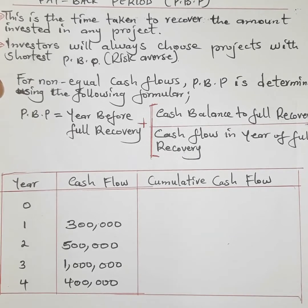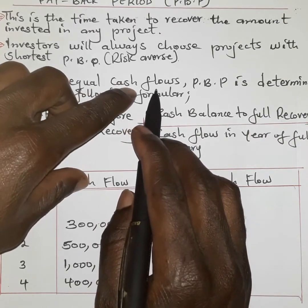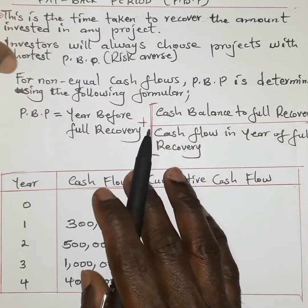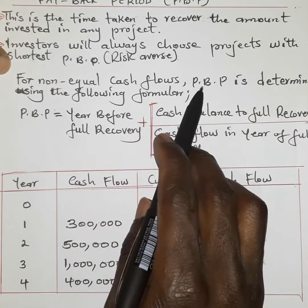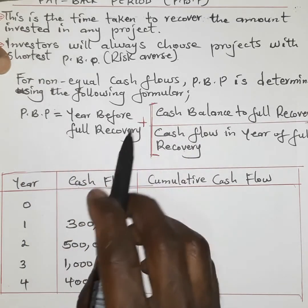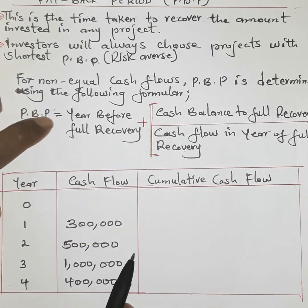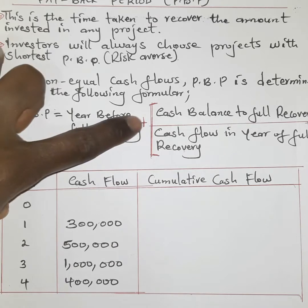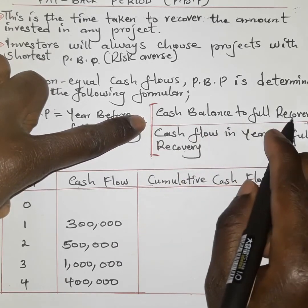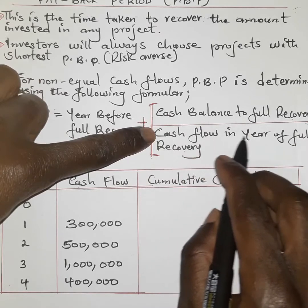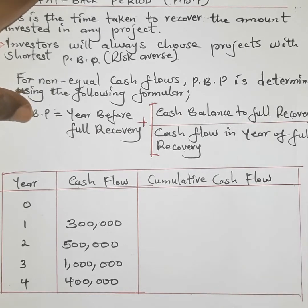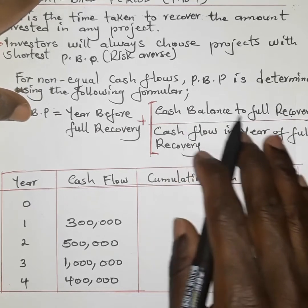Our question is touching on investment in a project with non-uniform cash flows. Cash flows refer to the amounts expected from the project on a yearly basis. For non-equal cash flows, the payback period formula is: Payback Period = Year before full recovery + (Cash balance to full recovery ÷ Cash flow in the year of full recovery).